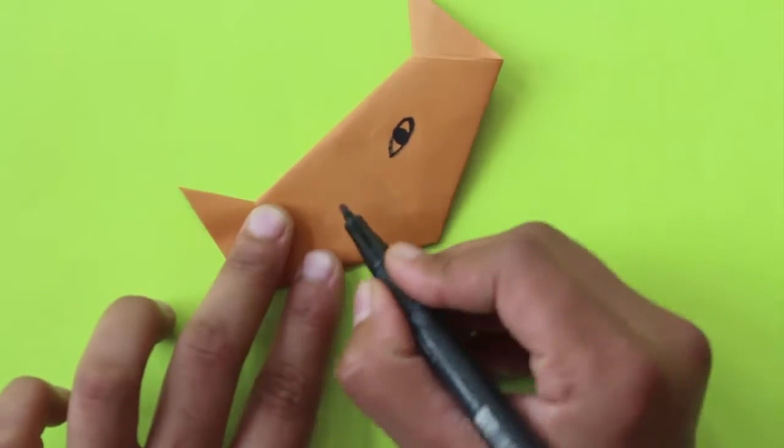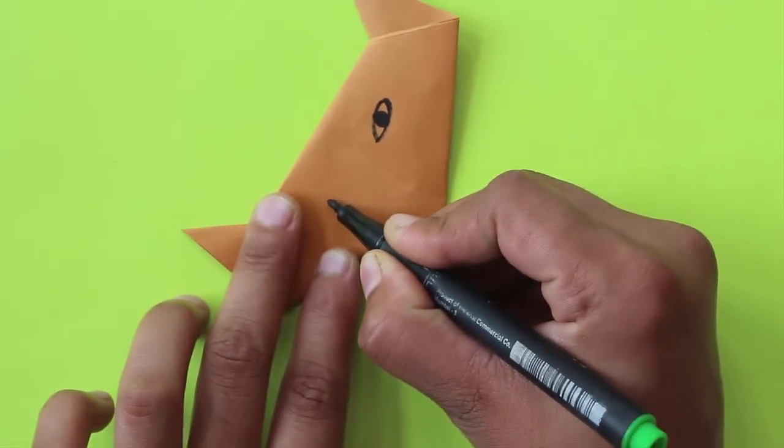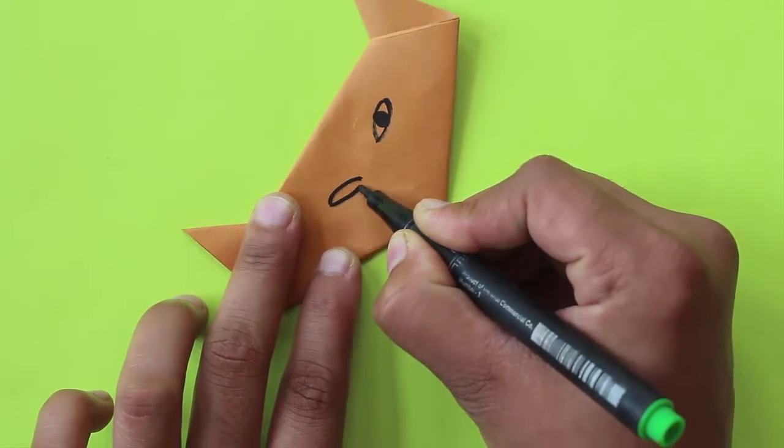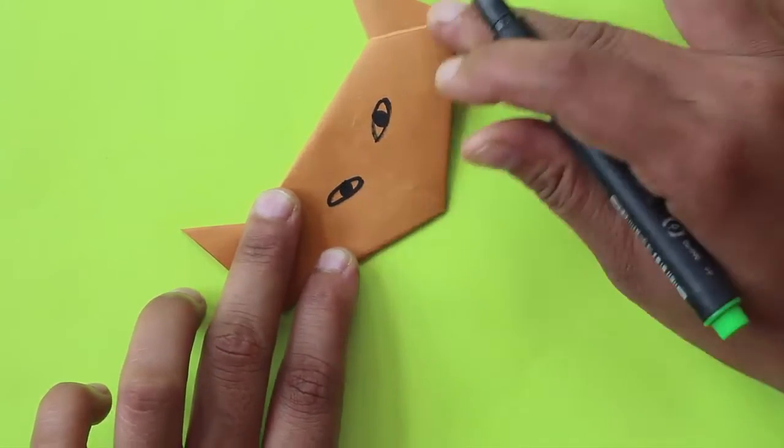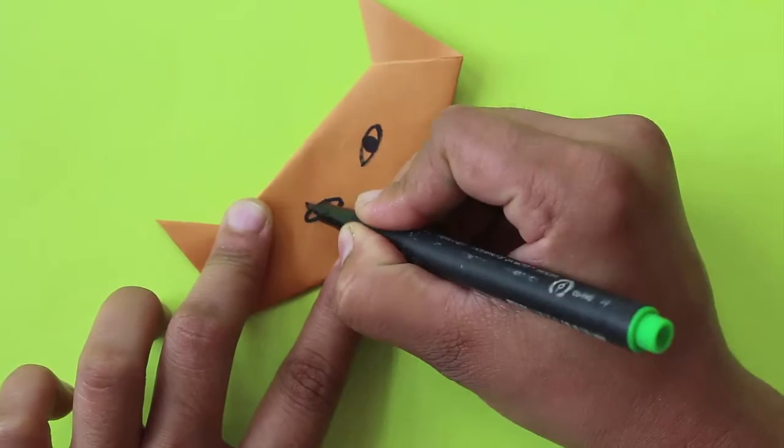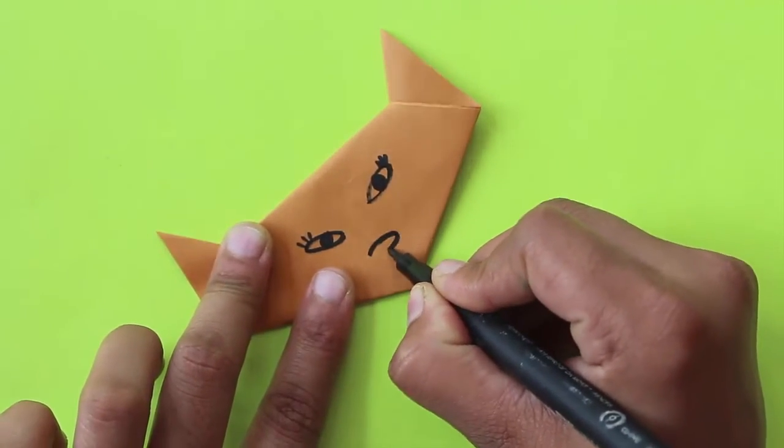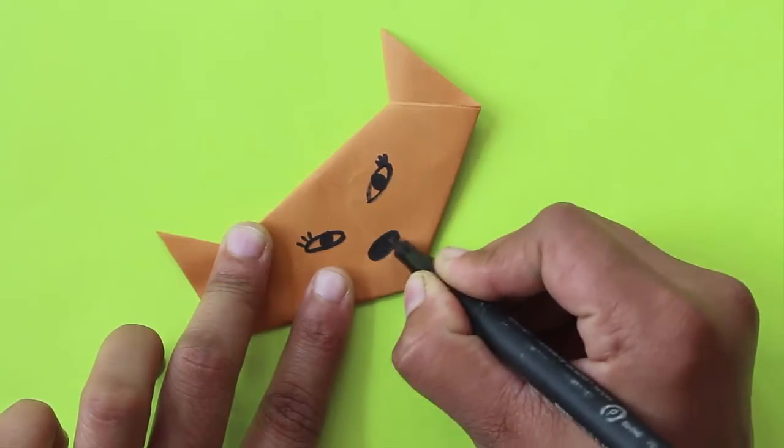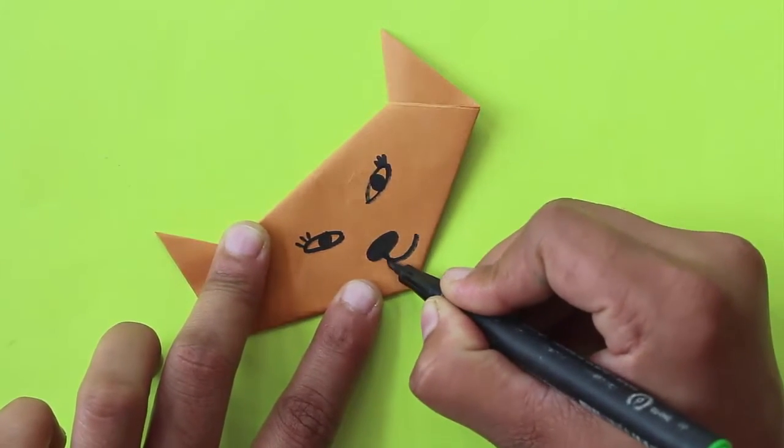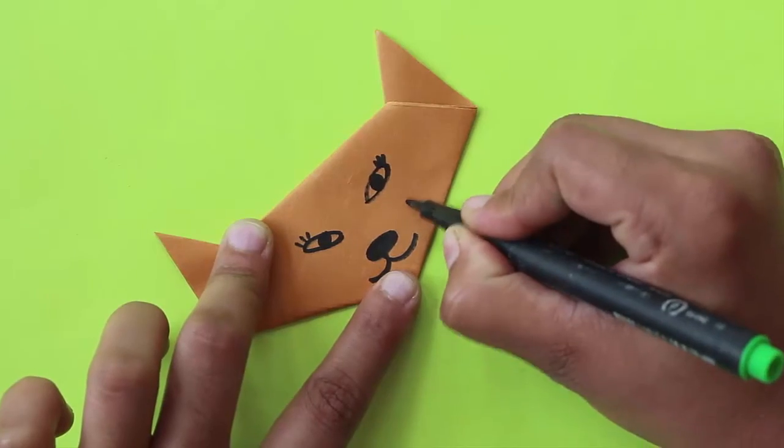Then draw two slant eyes, also make the eyebrows, the nose, and the whiskers to make the cat look like a real cat.